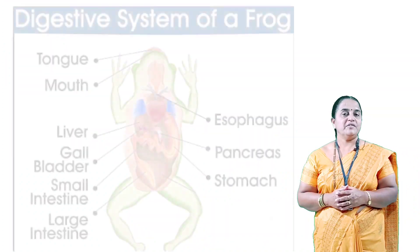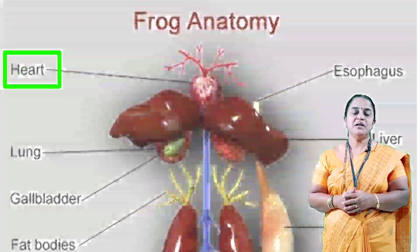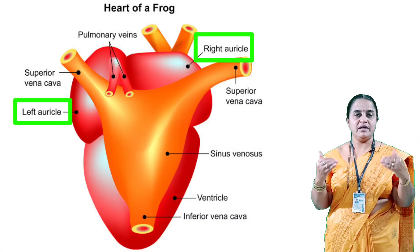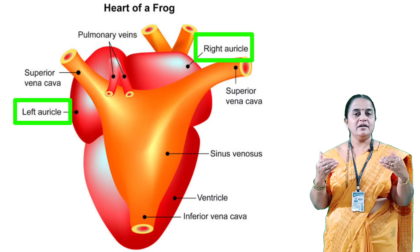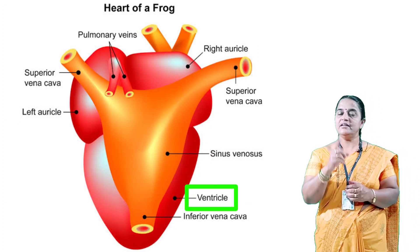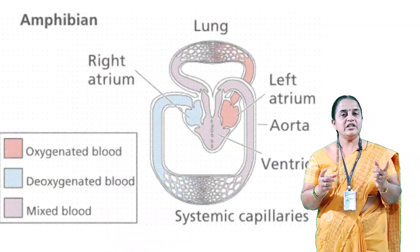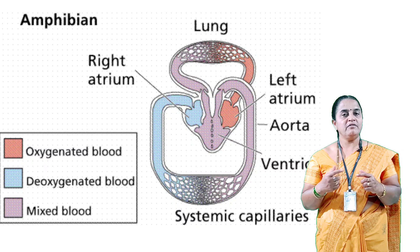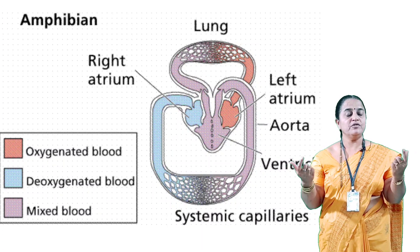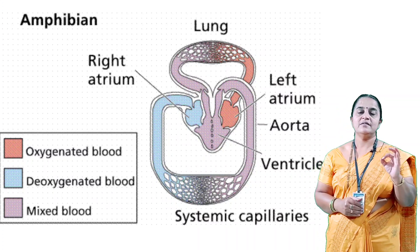The internal digestive system is well developed. The heart is three-chambered: two auricles receive blood from the lungs and from various parts of the body, but the ventricle has only one chamber. So oxygenated and deoxygenated blood gets mixed, and this mixed blood is circulated throughout the body. When this blood circulates below the skin, the skin remains moist.